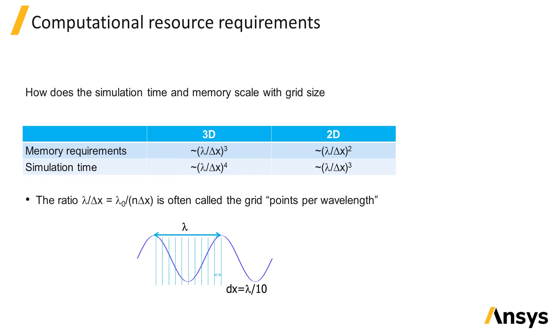Also, we often discuss the grid size not in absolute terms but relative to the wavelength of light. We call the ratio of the wavelength, lambda, to the grid size, delta X, the number of grid points per wavelength or sometimes just the points per wavelength. This is a key factor that determines the accuracy of the FDTD simulation.